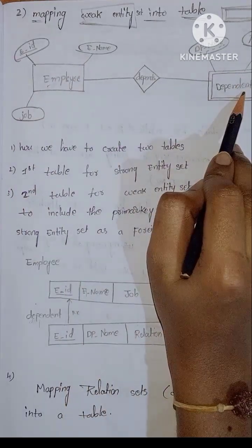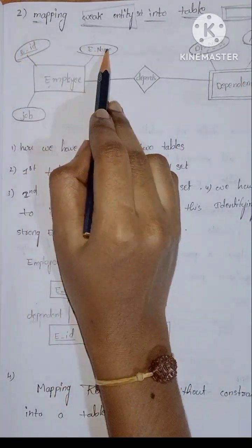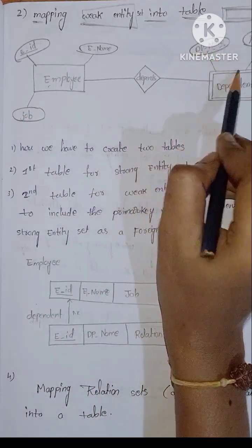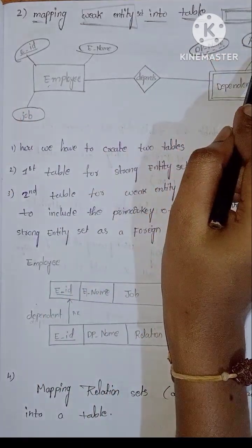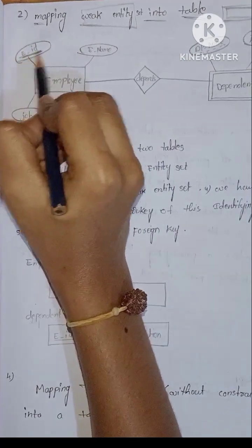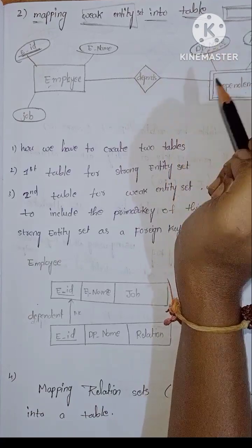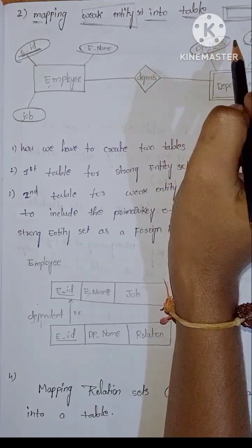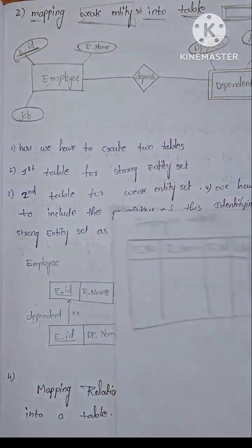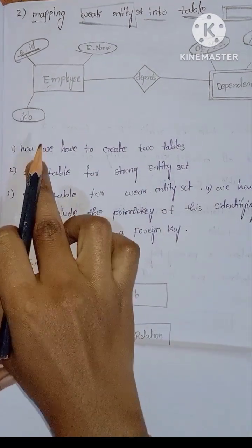We have employee details and dependent details. The attributes of the employee are employee ID, employee name, and job. The dependent entity has attributes: dependent name and relation. The primary key includes dependent name and employee ID.